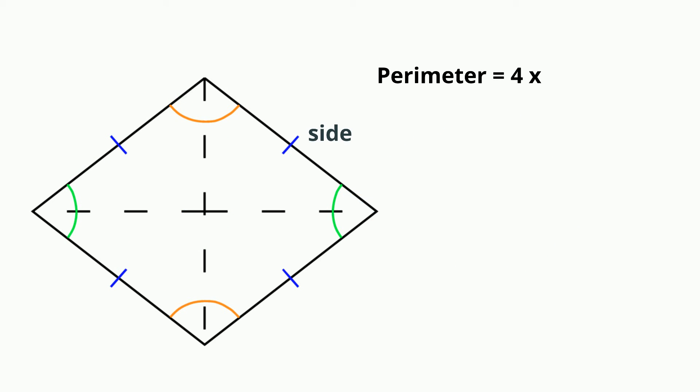If you need to find the perimeter of a rhombus, you can take four times one side, or 4s.